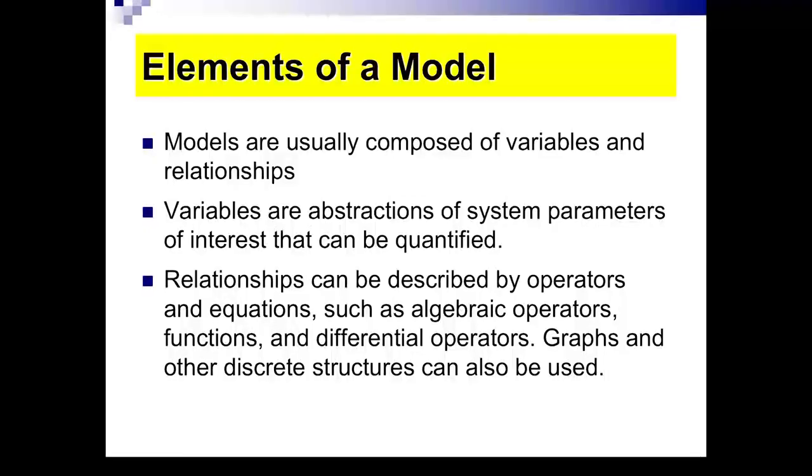I want to discuss what a model is. A model has certain elements. They are usually composed of variables and relations between these variables. What are variables? Variables are really abstractions of the parameters of the system that are of interest. And these variables usually need to be quantified. Relationships, on the other hand, are described by various functions, operators. These operators can be algebraic, they can use a lot of calculus, but you can also use discrete tools like graphs and networks.